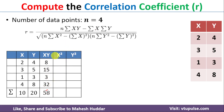Next, we compute x squared for each data point and add all those values to get Σx² = 30. Similarly, we compute y squared for each data point and add them to get Σy² = 114.